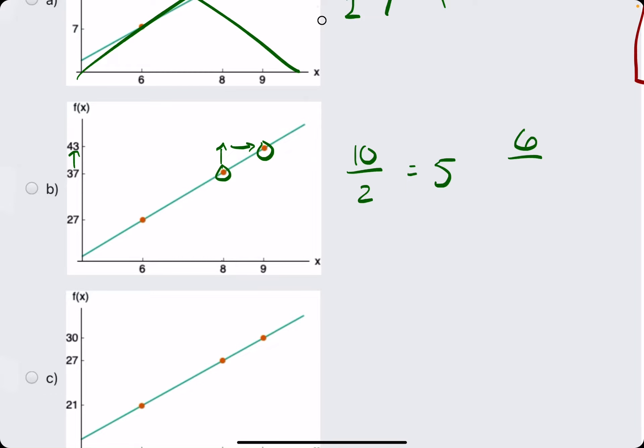So 8 to 9 has a run of 1. So the question is, does 6 over 1 or 6 equal 5? Of course not. So this is not linear either.